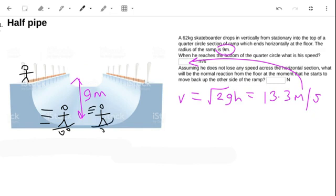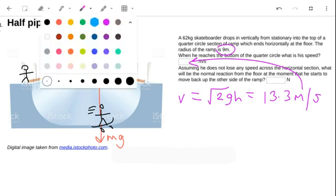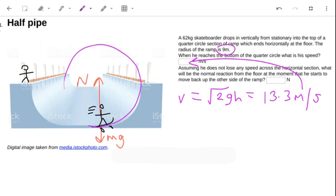So other than just his weight, there would be more normal reaction needed in order to move him in a circle. So just drawing those forces, we're going to have normal reaction force here and weight, because then the net force is acting towards the center of the circle.